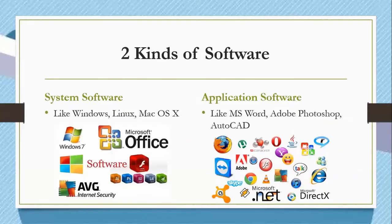Software has two kinds. System software, like Windows, Linux, and Mac OS. While application software is like Microsoft Word, Adobe Photoshop, or AutoCAD.